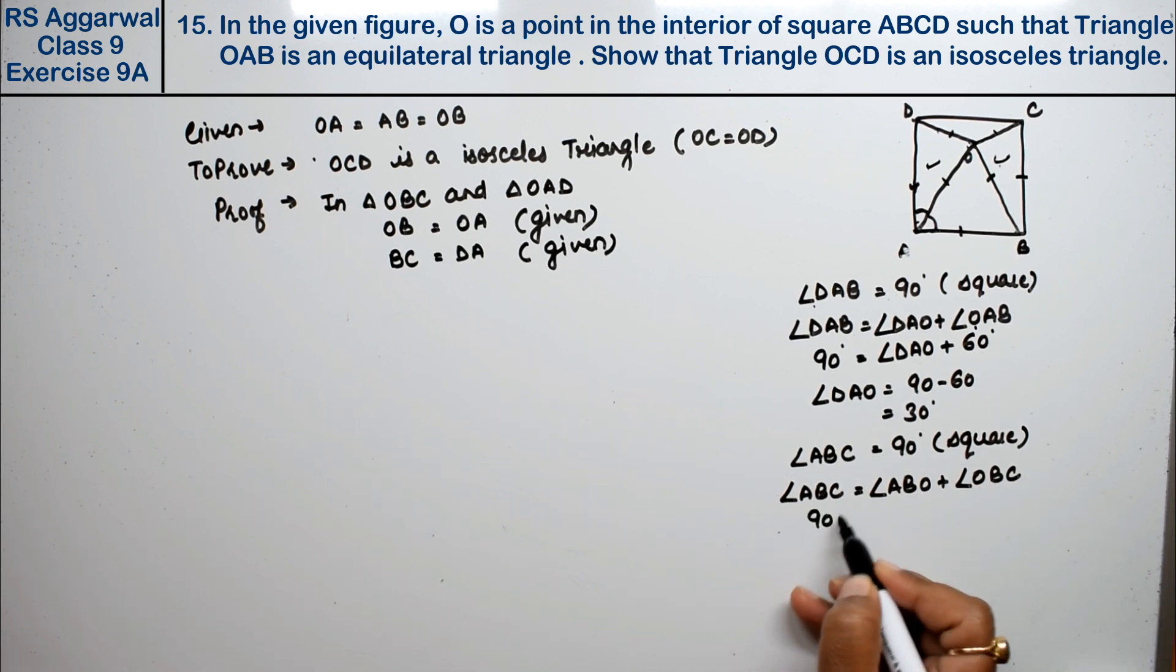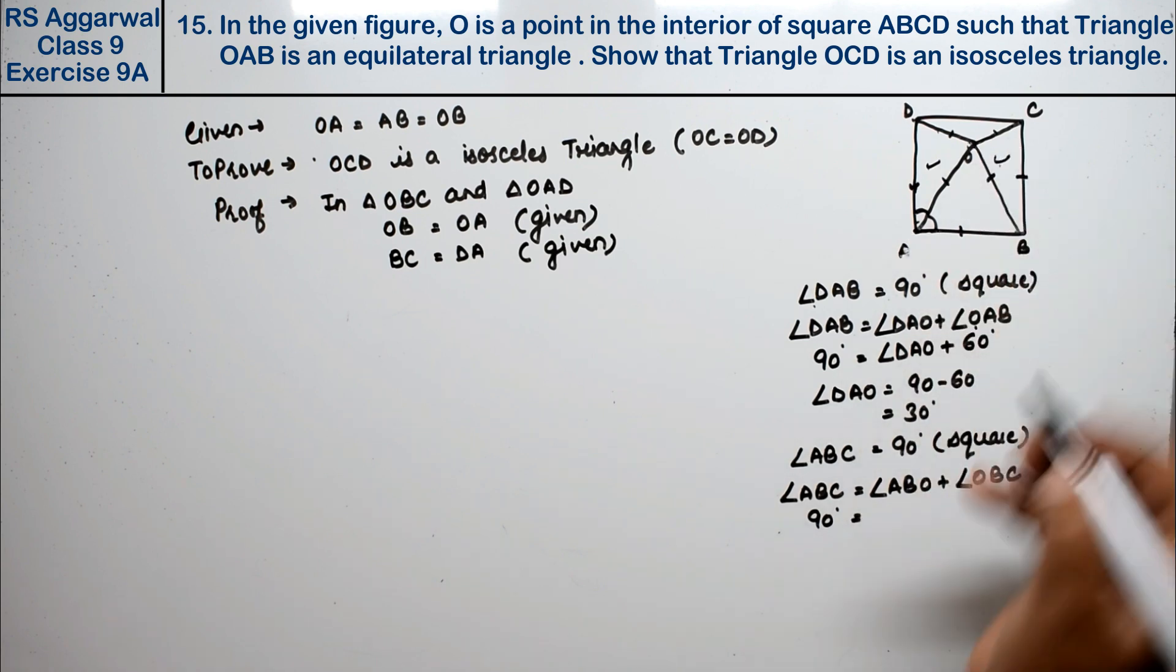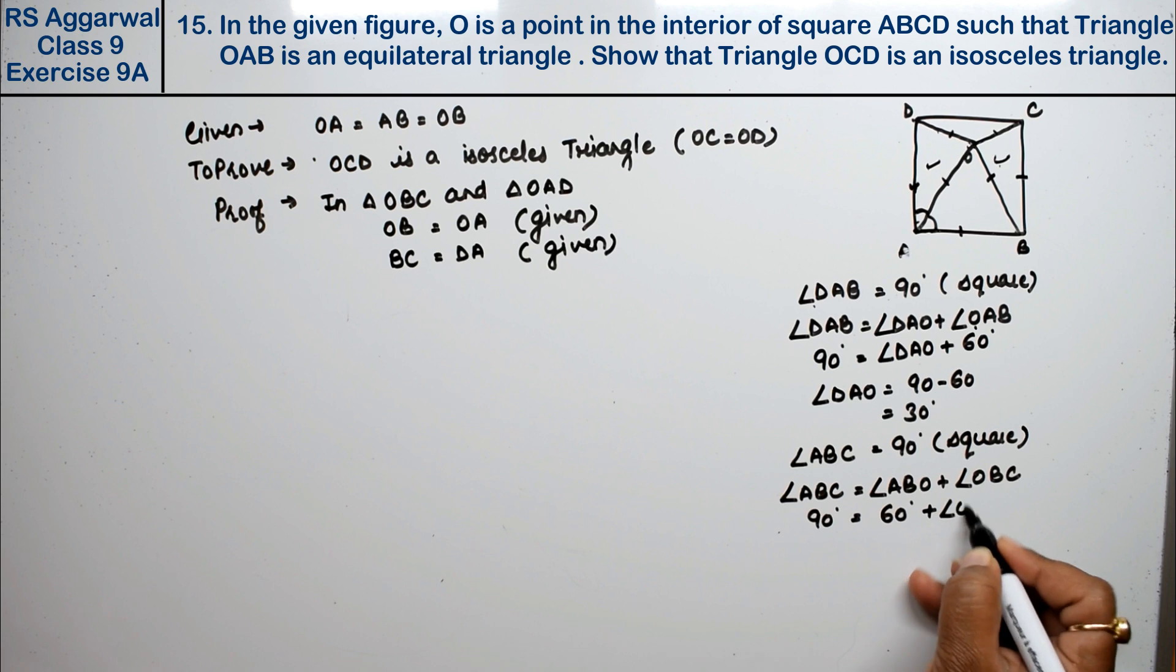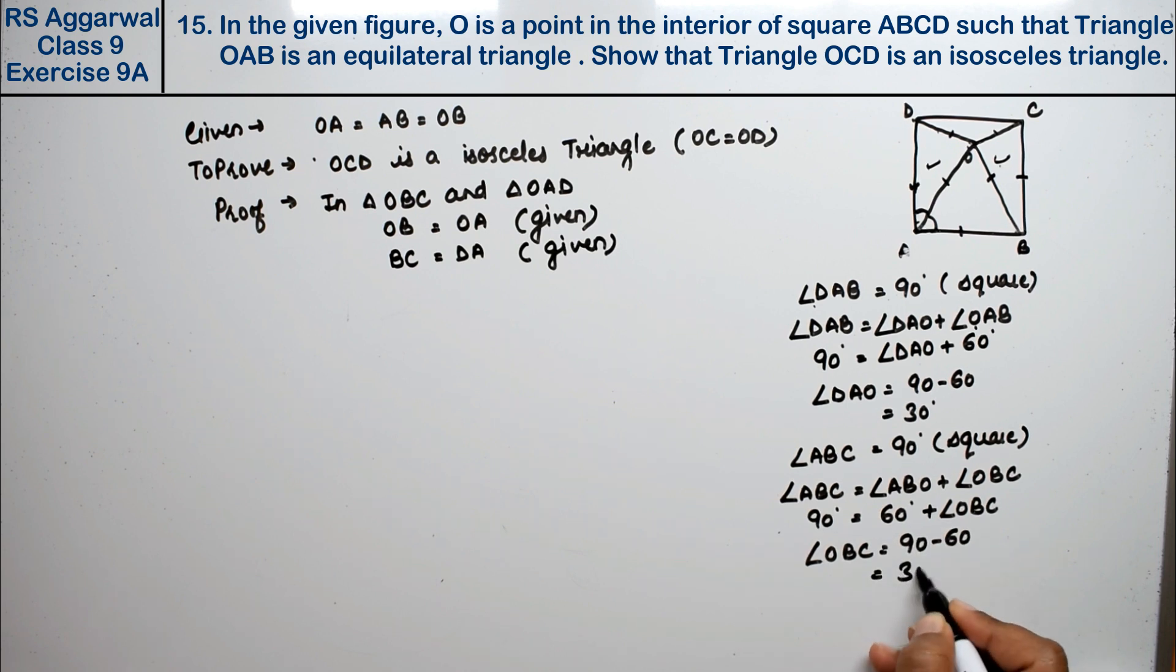This is 90 degrees. ABO is 60 degrees because it's an equilateral triangle. Therefore, angle OBC equals 90 minus 60, which is 30 degrees.